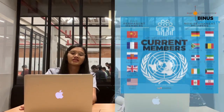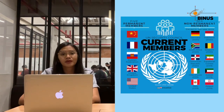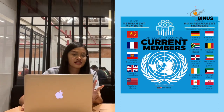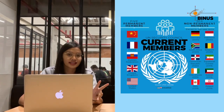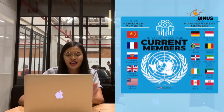Members of the UNSC consist of 15 member states with five permanent members, namely China, France, the Russian Federation, the United Kingdom, and the United States. The other ten members are non-permanent members.